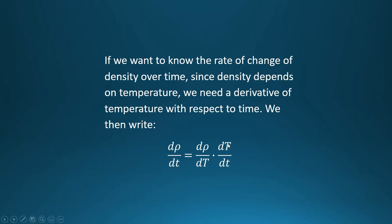It's almost like the d-capital-T's cancel, leaving d-rho-dt equals d-rho-dt. In calculus, we call this a chain rule. I'm presenting this so you understand how we examine long-term changes with respect to density and temperature. We could plug in specific formulas and take derivatives. Keep this in mind because later we're going to be expanding this when we get to our discussion on oceanic and saltwater systems.